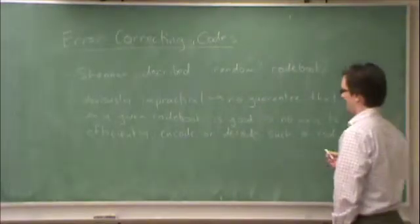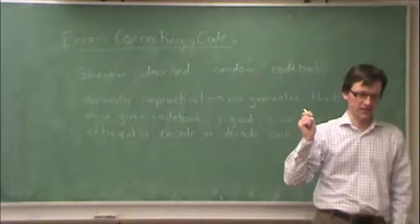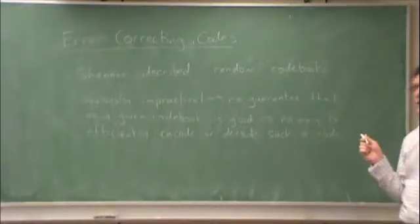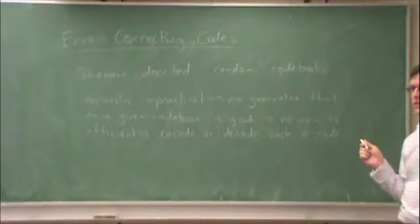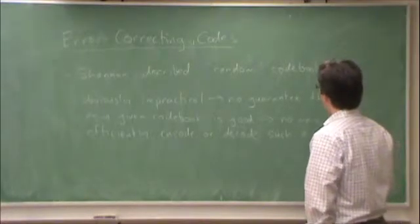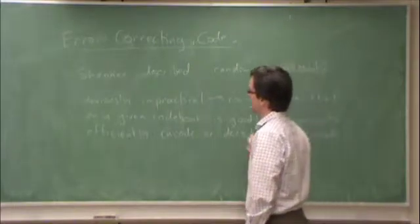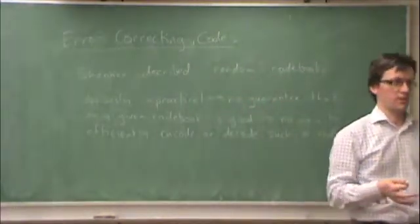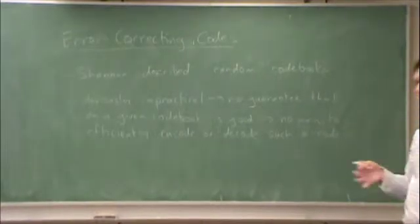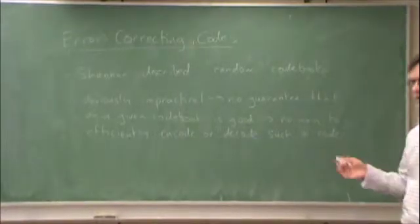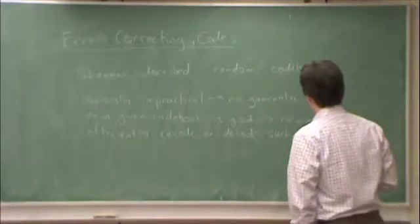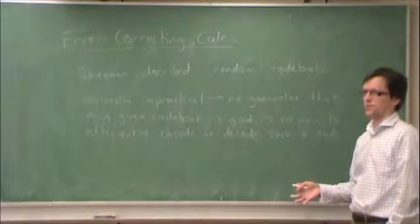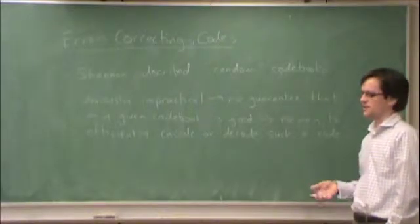There's no guarantee that any given code book is good. If you're selecting code books randomly, there's some chance, possibly a large chance, that that code book will be bad. All we guaranteed from the channel coding theorem was that if you do random code book selection, there exists code books that are good. That was based on the average argument. On average, the probability of error goes to zero, so there must exist at least one good code book.